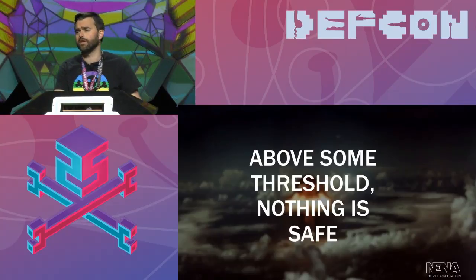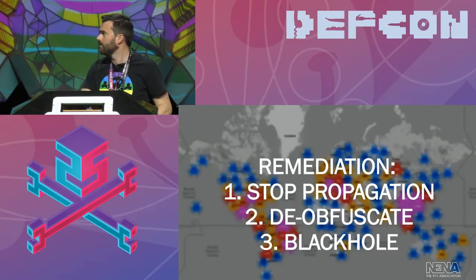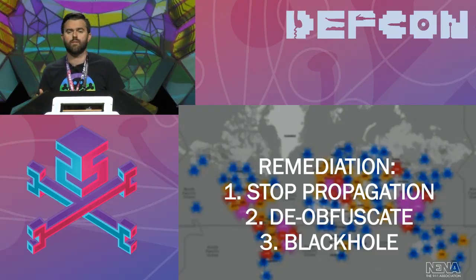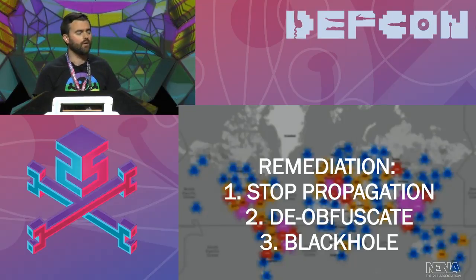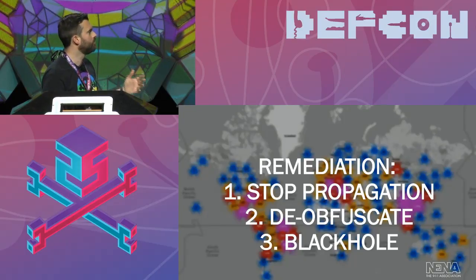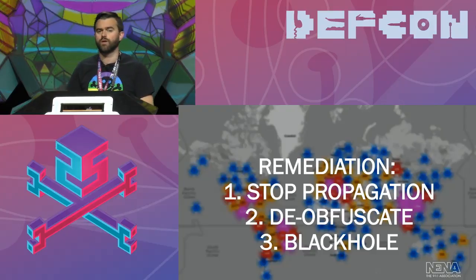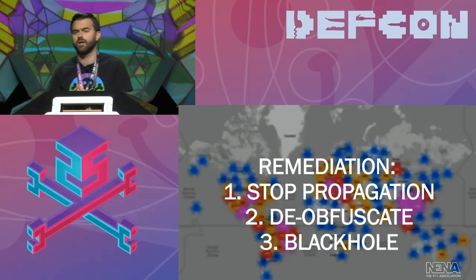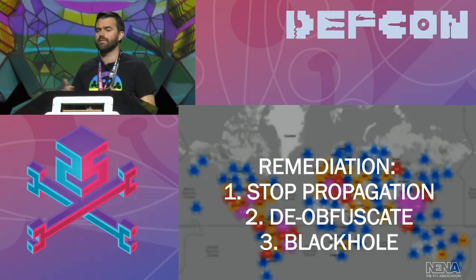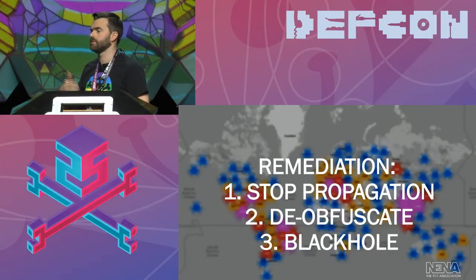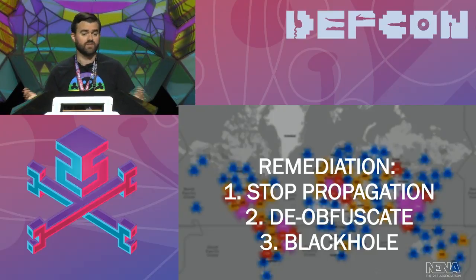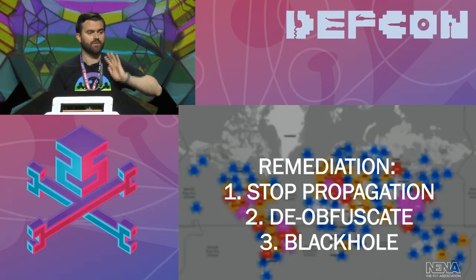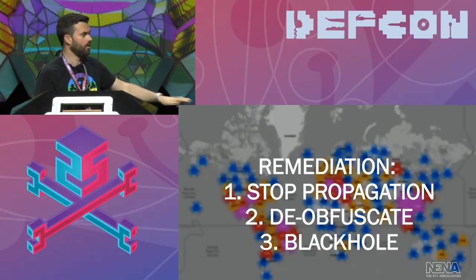So what did we do? Knowing that we have these vulnerabilities, let's get into remediation. The first thing, obviously, was to stop propagation — we had to stop this thing getting bigger, and we had to do that very quickly. We also had to deobfuscate the links if we could, so that people would know it was potentially shady, and ultimately just get the site offline — get that code to a point where nobody can reach it.